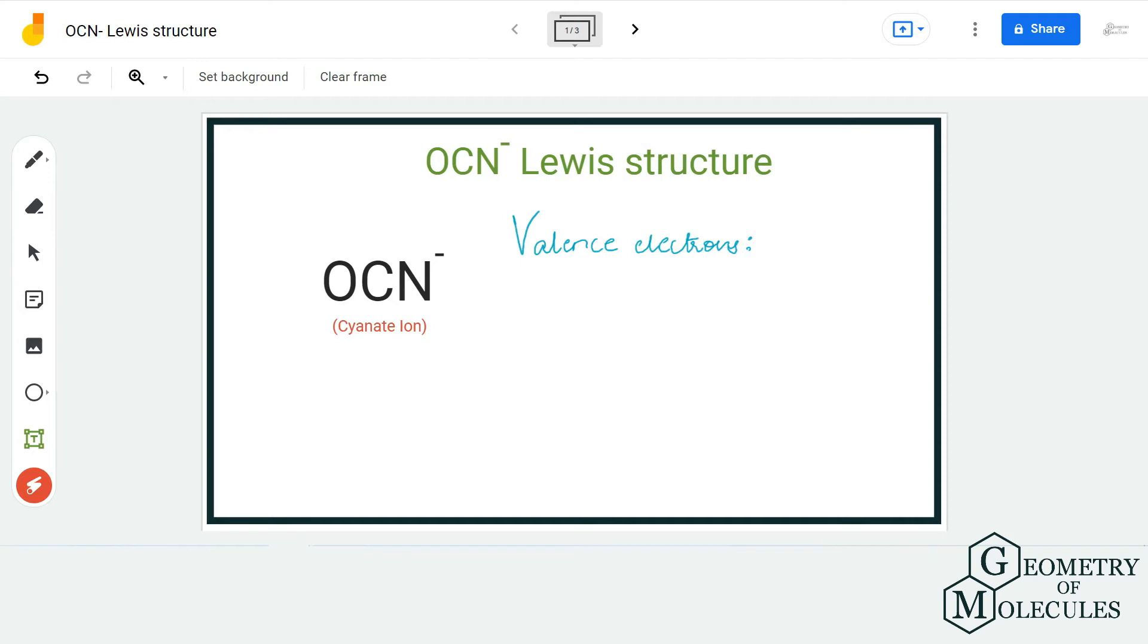Hi guys, welcome back to our channel. In today's video we are going to draw the Lewis structure for OCN⁻ ion, the chemical formula for cyanate ion.